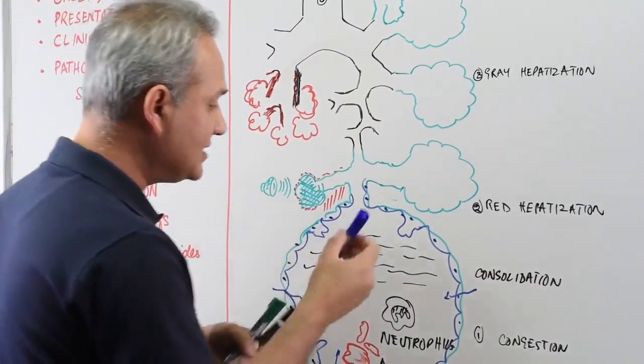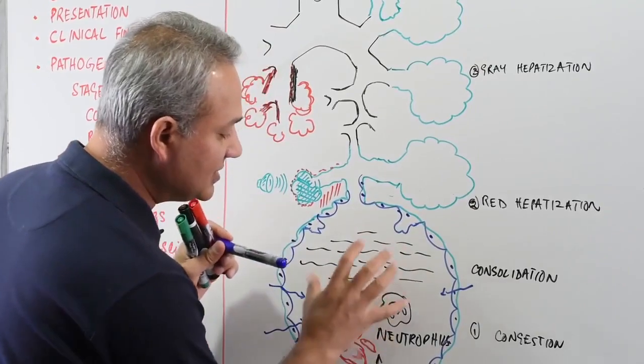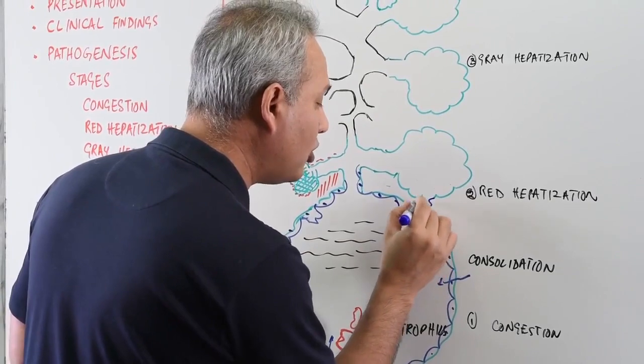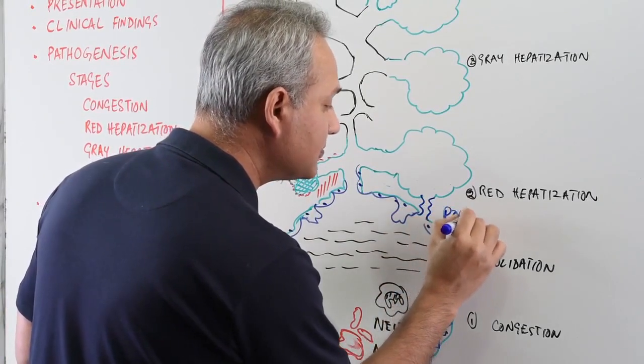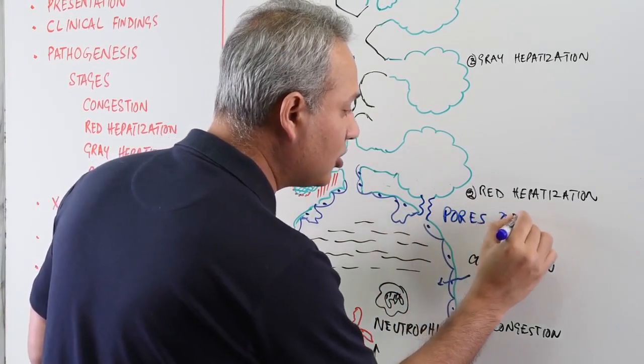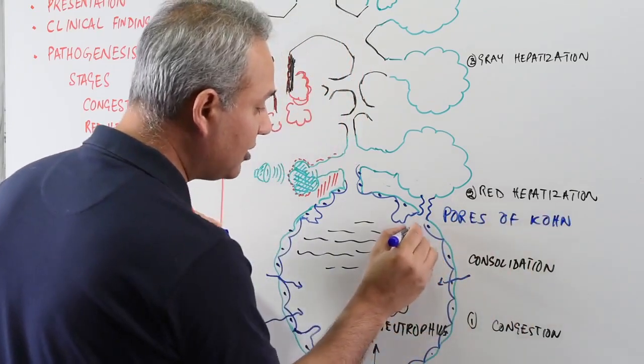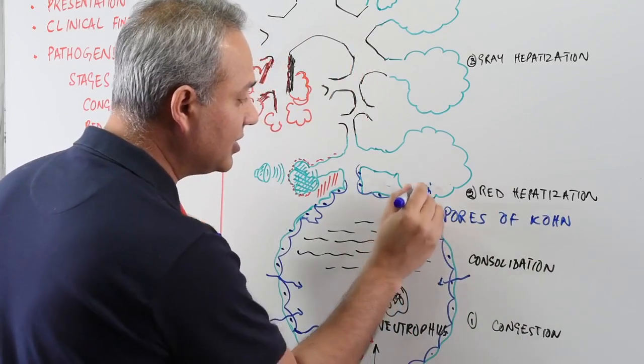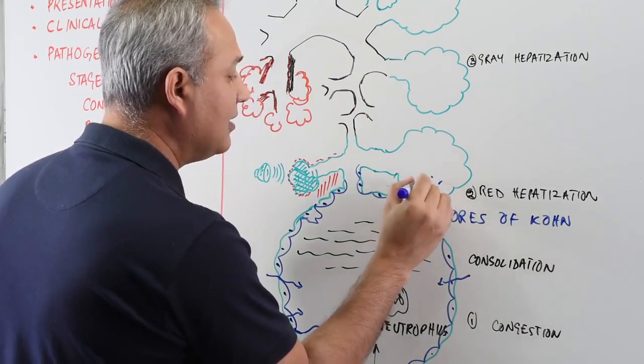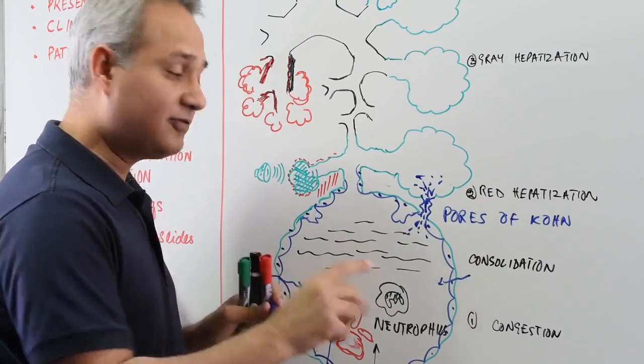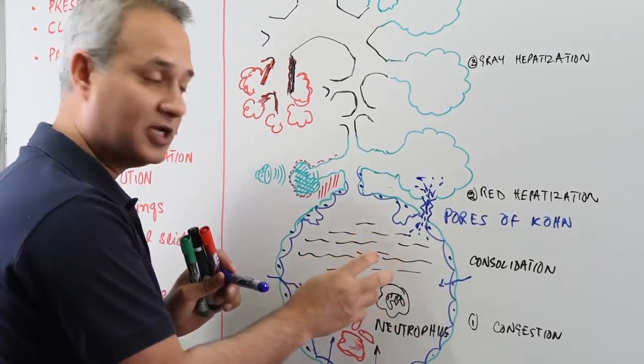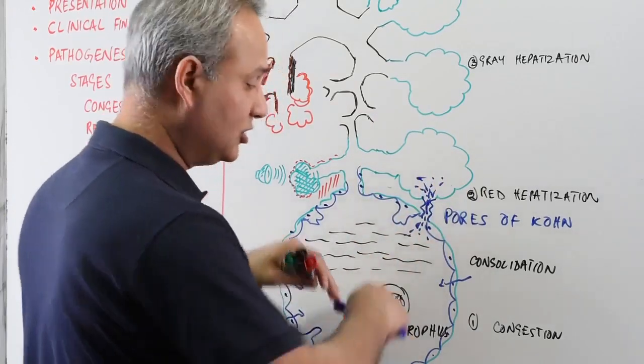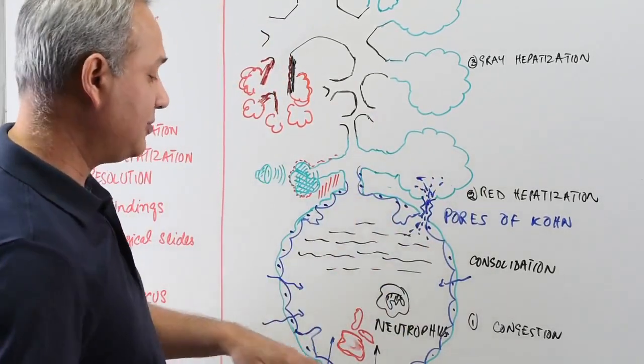One more thing is that as the pathology starts progressing and as these things start filling up, remember there are pores of Kohn, which would allow the infiltrate to move from one alveolus to the next alveolus. So even if this becomes all fibrosed, that fibrosed material would also involve more than one alveoli. So this is the process that is happening here.